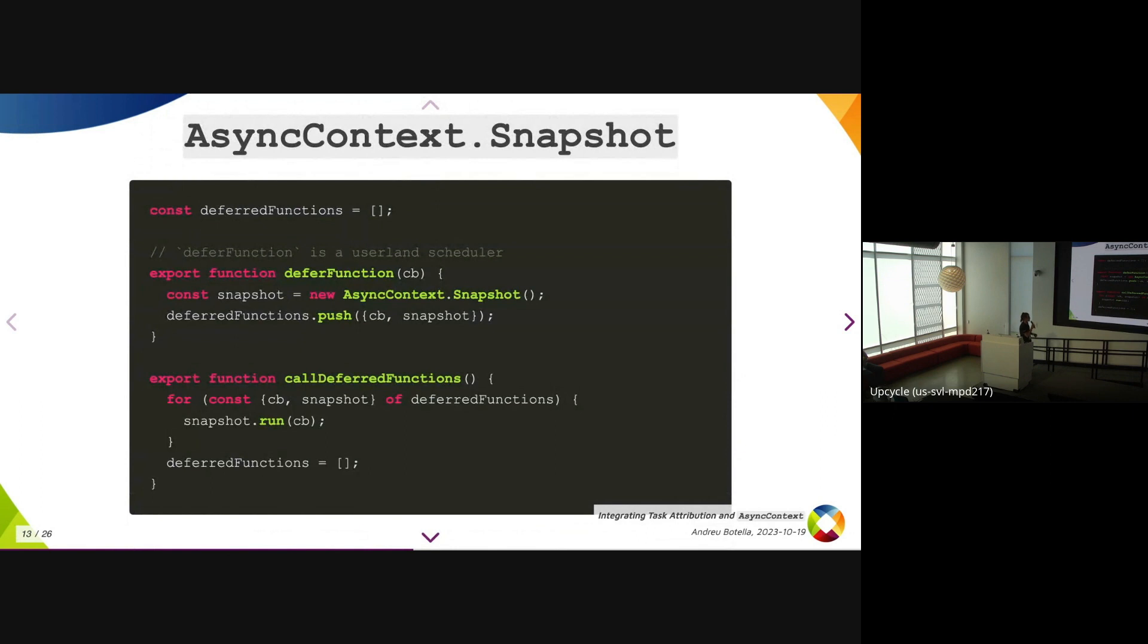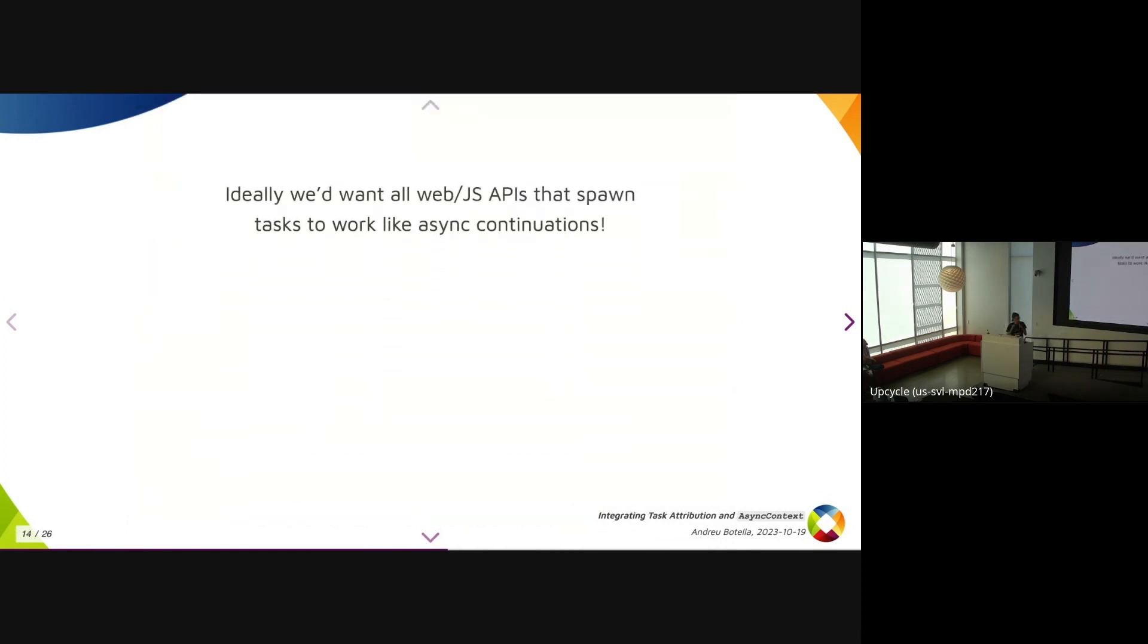You can use this for building userland schedulers. So here you have a userland scheduler. You call defer function. This just stores the callback that you pass to it with the current snapshot. And then at some later point, you call the deferred function, and this runs the callback within the snapshot that was stored with it.